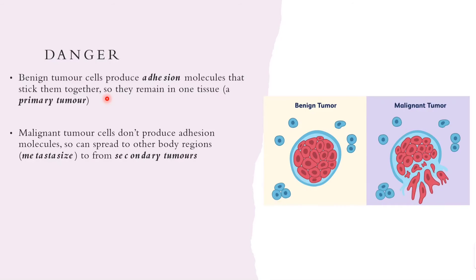Malignant tumor cells don't produce adhesion molecules, so there is nothing to stick the cells together. This means they can spread to other body regions — they can metastasize. With no adhesion molecules, some cells can break apart from the primary tumor, spread to other regions of the body, and start secondary tumors.